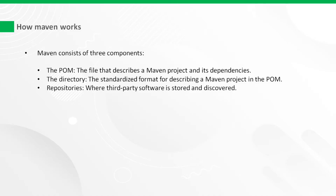How does Maven work? Maven consists of three components: the POM, the file that describes a Maven project and its dependencies; the directory, the standardized format for describing a Maven project in the POM; and repositories, where third-party software is stored and discovered.